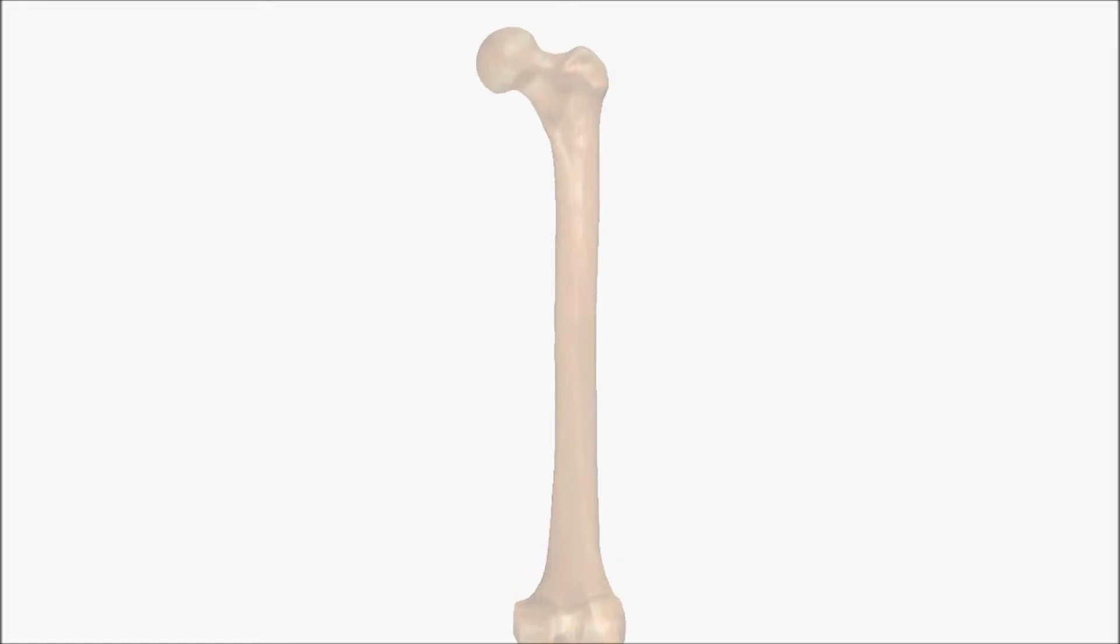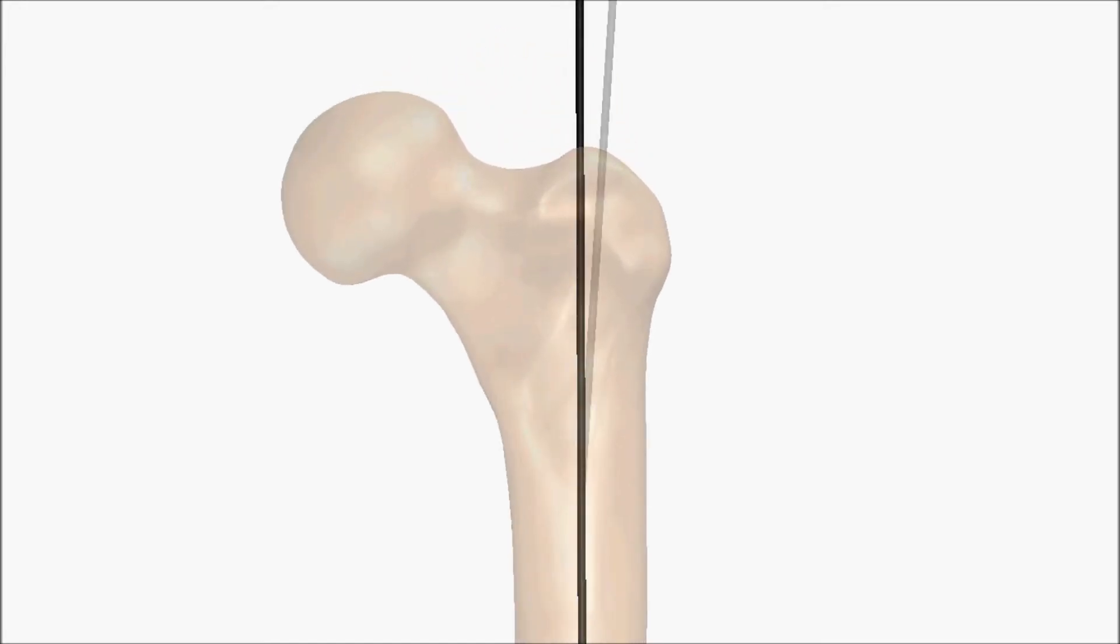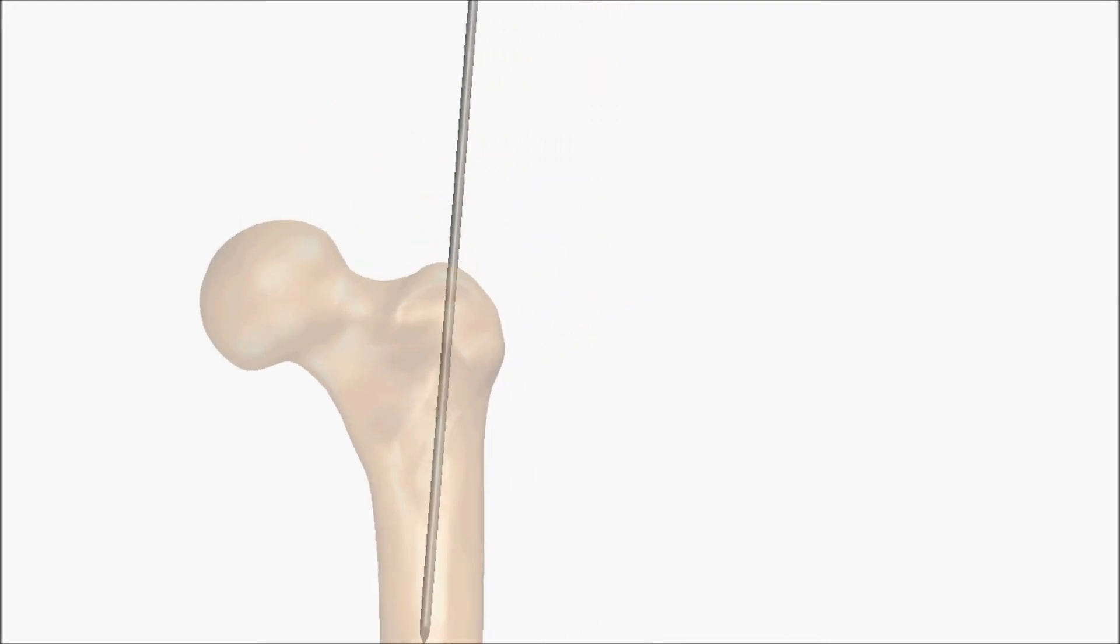The starting point for the talendistal fix proximal femoral nail is just lateral to the tip of the greater trochanter. The entry pin should intersect the shaft axis at the level of the lesser trochanter. With the entry pin in the appropriate position,